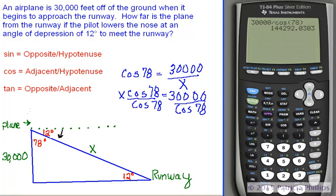We have one, four, four, two, nine, two. So, it looks like our plane on its way to the runway is going to be traveling 144,292 feet. And there you have it. That's it.